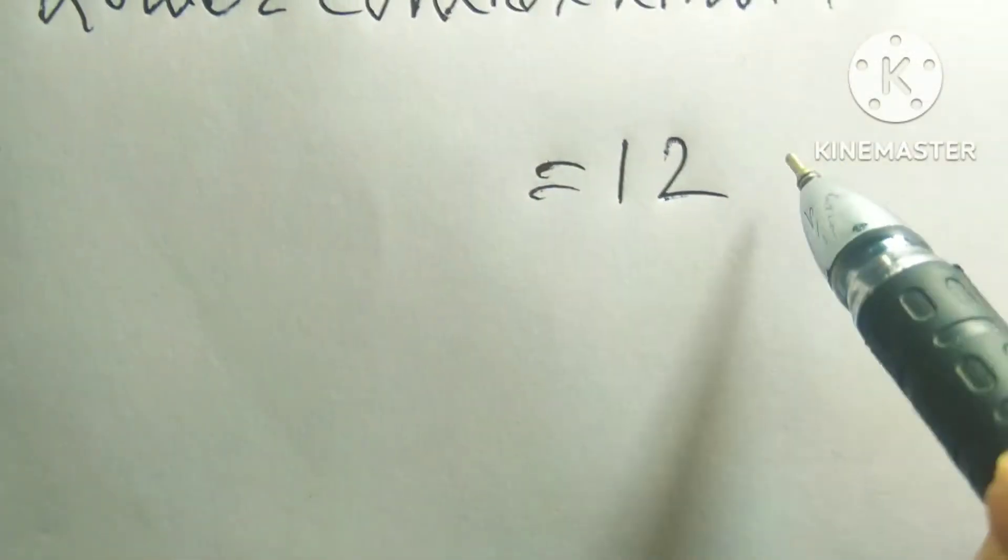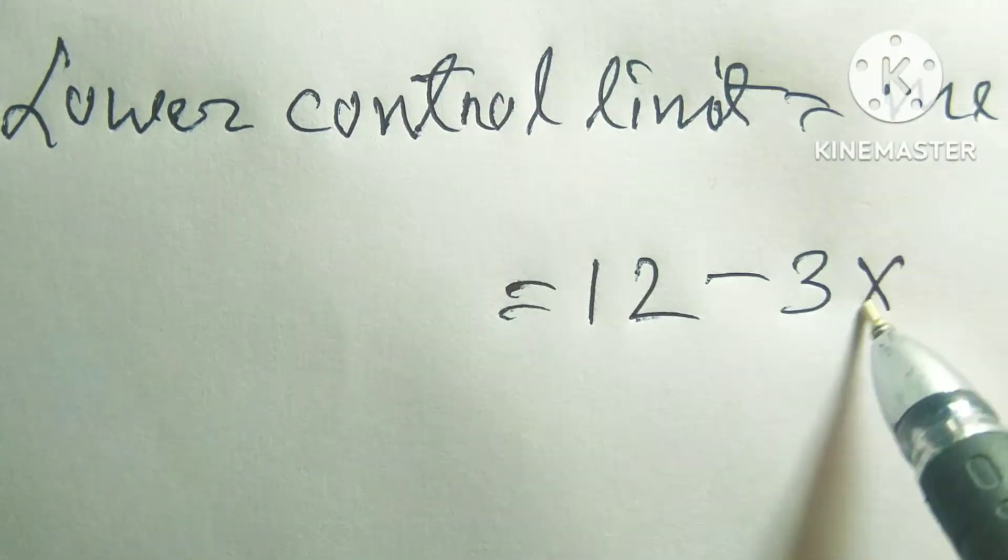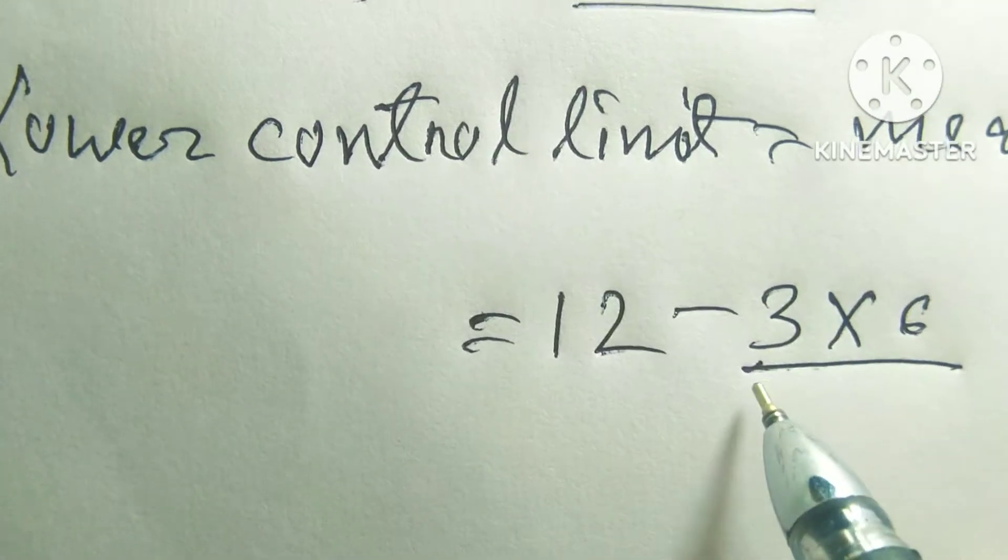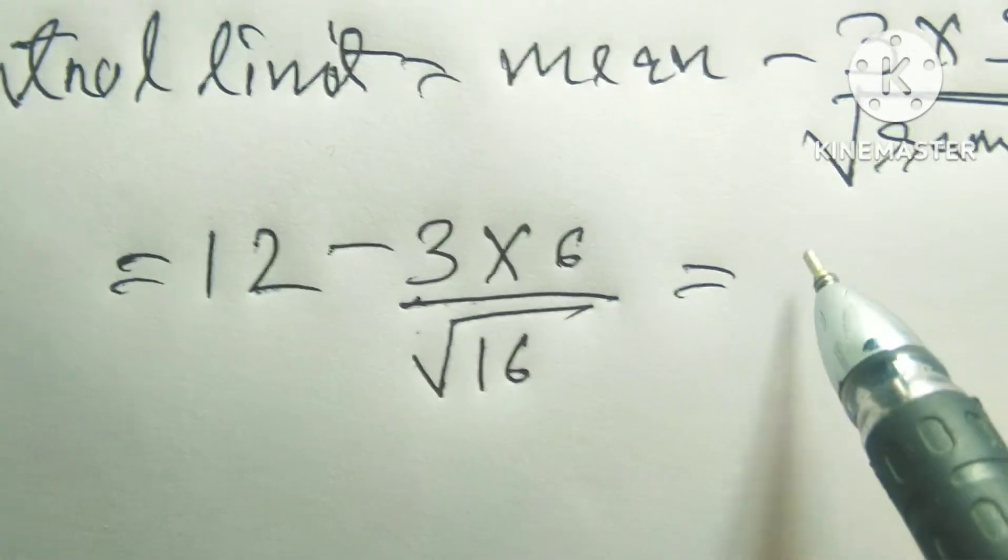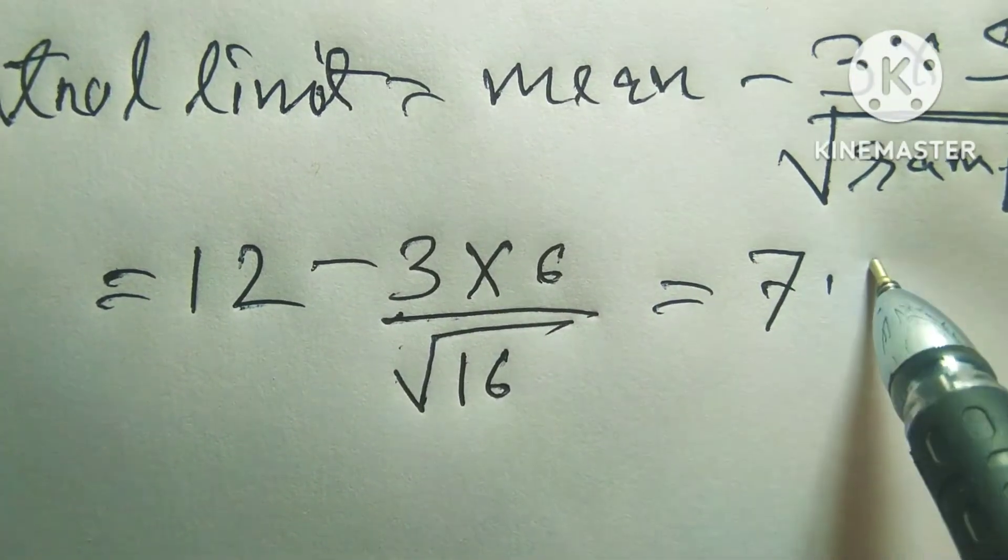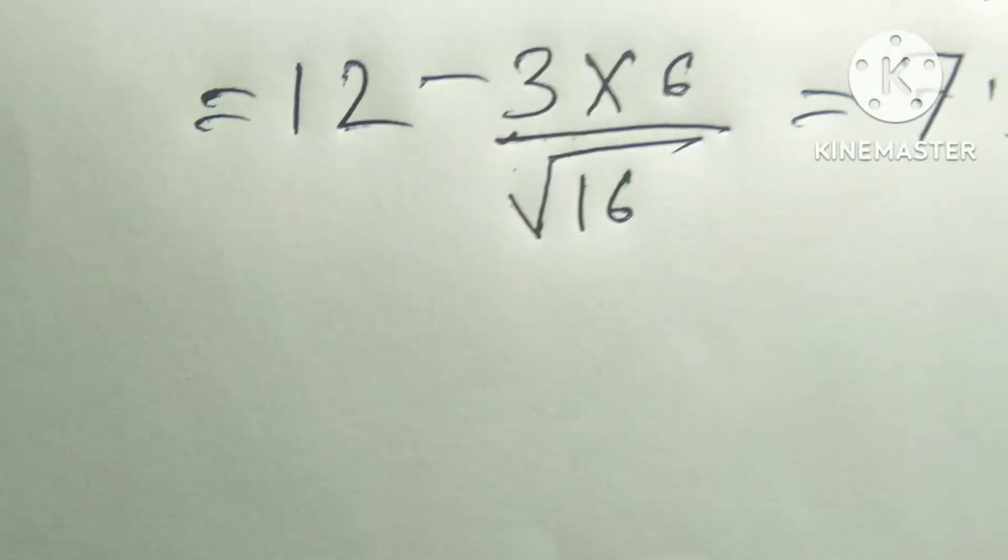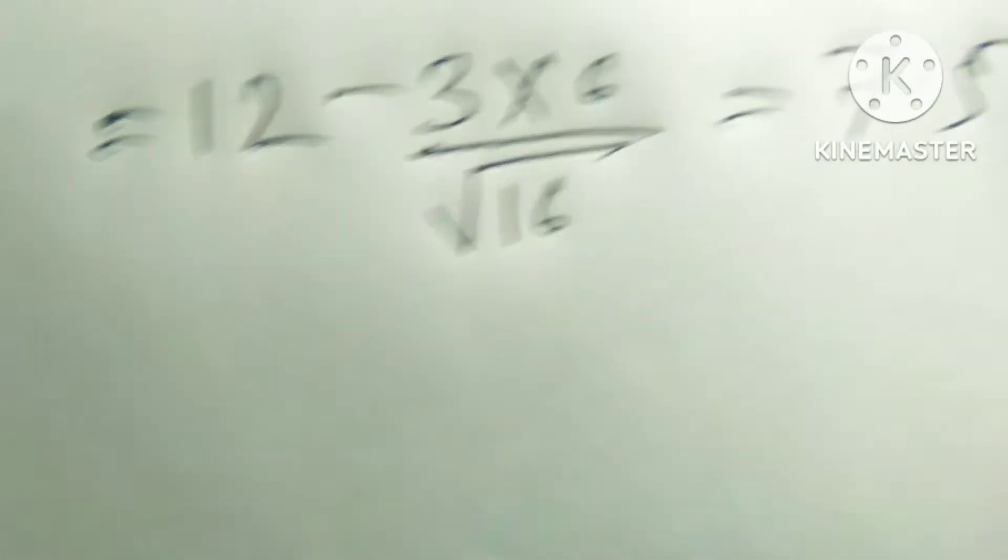So it is 12 minus 3 into 6 divided by root over 16. So I get 7.5. And next, 7.5 units.